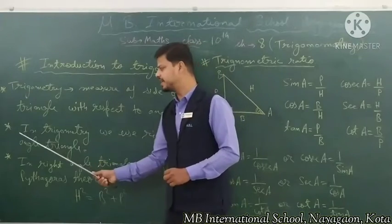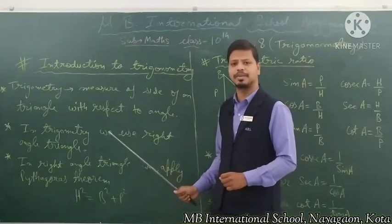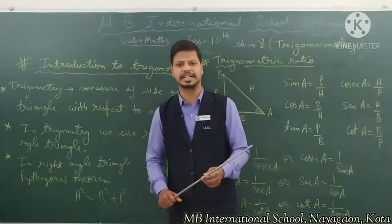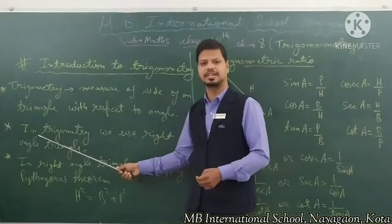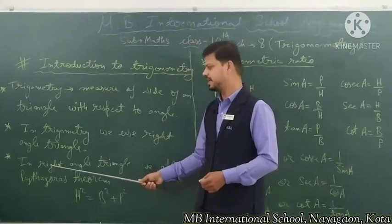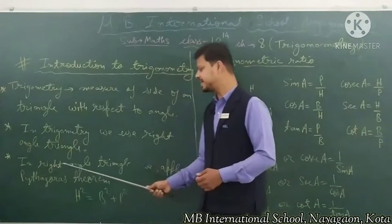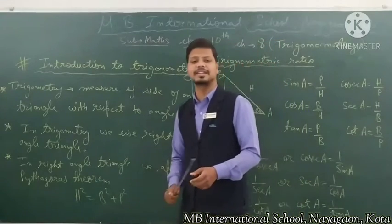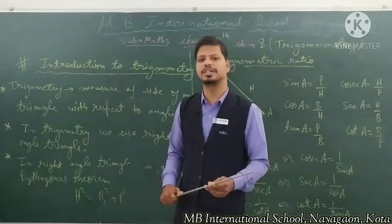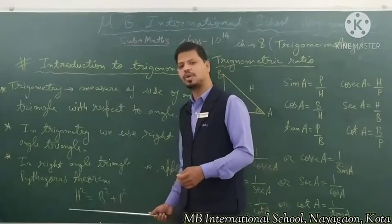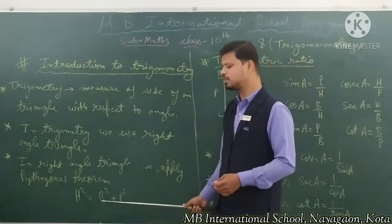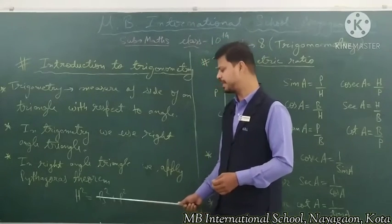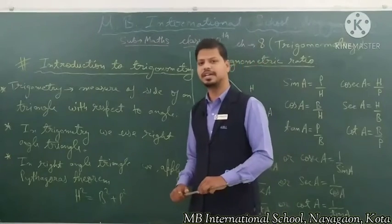Second point: in Trigonometry, which type of triangle do we use? In Trigonometry, we use a right angle triangle — the triangle in which one angle is 90 degrees. In the right angle triangle, we use the Pythagoras theorem: hypotenuse squared equals perpendicular squared plus base squared.